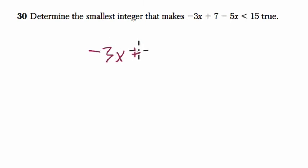So we have negative 3x plus 7 minus 5x is less than 15. And combine my terms first.